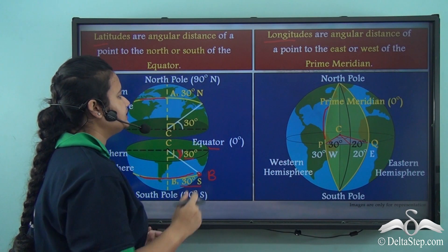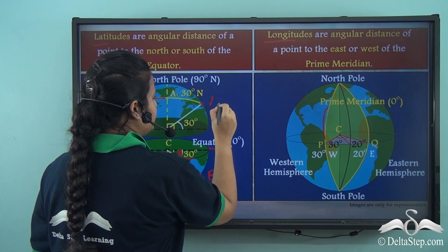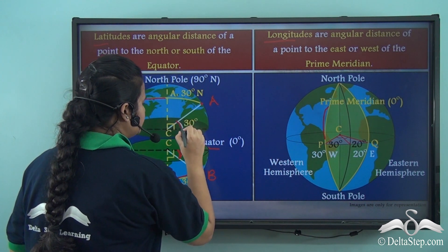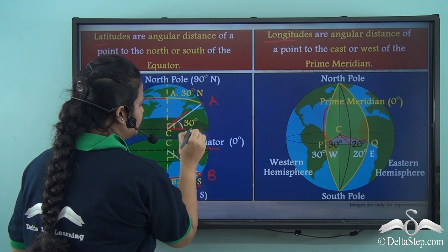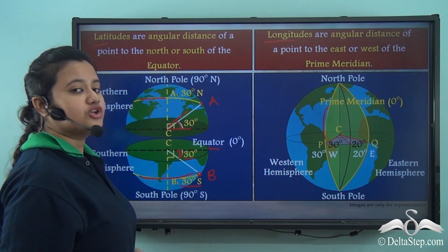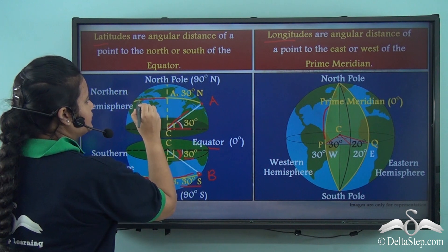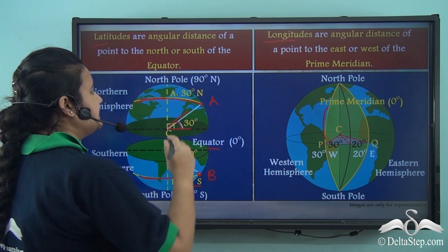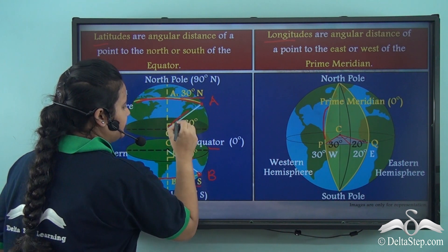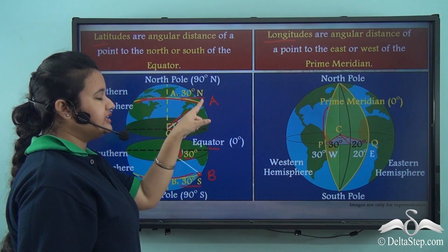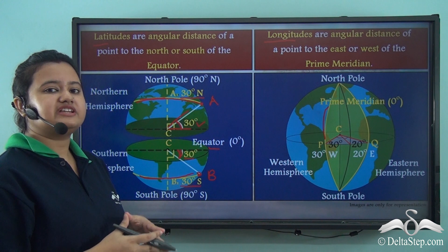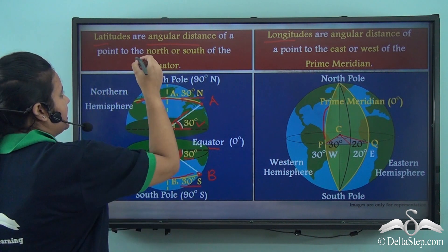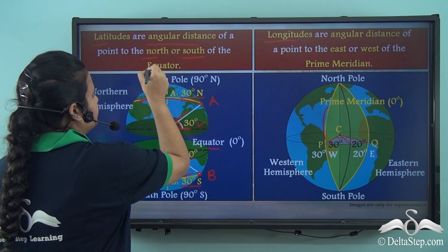Similarly, let us imagine a point A lying to the north of the equator. We can see that the angular distance between CA and the equator is 30 degrees. So if we draw a latitude passing through point A, then this latitude will be marked as 30 degrees north, because this angular distance is 30 degrees and this point lies to the north of the equator. So latitudes represent the angular distance of a point lying to the north or south of the equator.